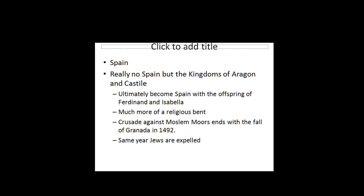In Spain, you see a different development. In the beginning, there is no real Spain, but the kingdoms of Aragon and Castile. Ultimately, you get a Spain with the offspring of Ferdinand and Isabella. Spain has a much more religious bent, especially with the development of the crusade against the Muslim Moors, which ends in the fall of Granada in 1492.